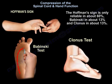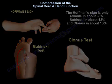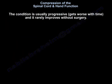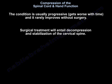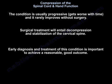The Hoffmann sign is only reliable in about 60%, Babinski in about 13%, and clonus in about 13%. The condition is usually progressive, it gets worse with time, and it rarely improves without surgery. Surgical treatment will entail decompression and stabilization of the cervical spine. Early diagnosis and treatment of this condition is important to achieve a reasonably good outcome.